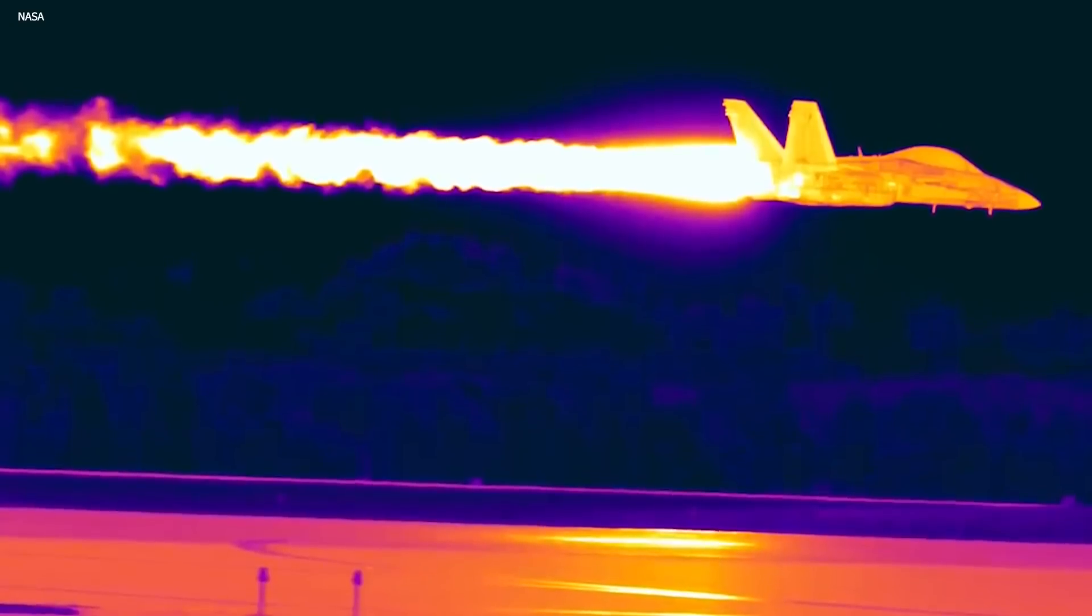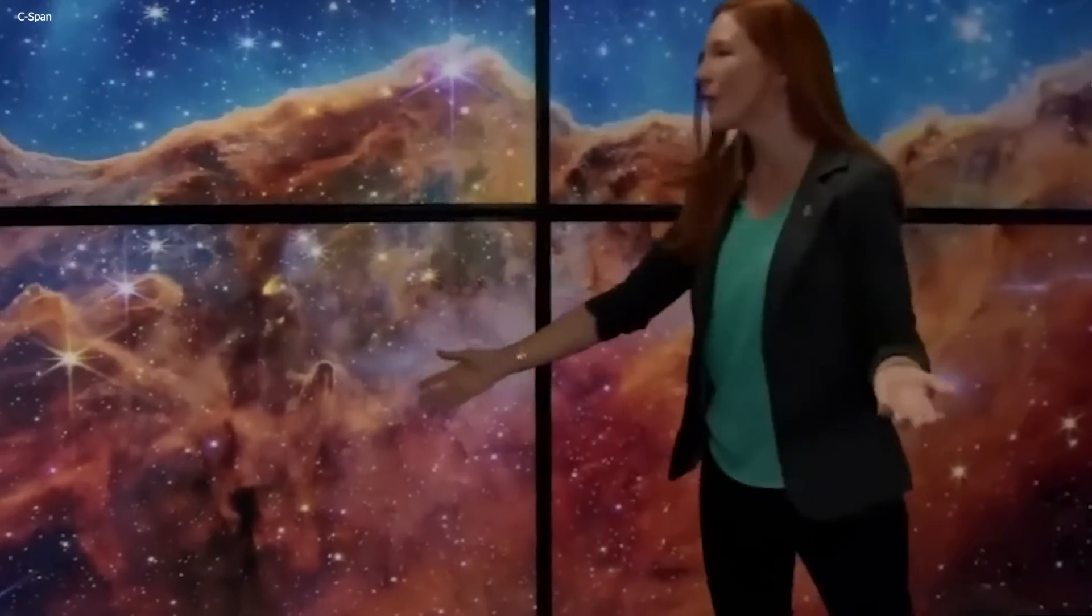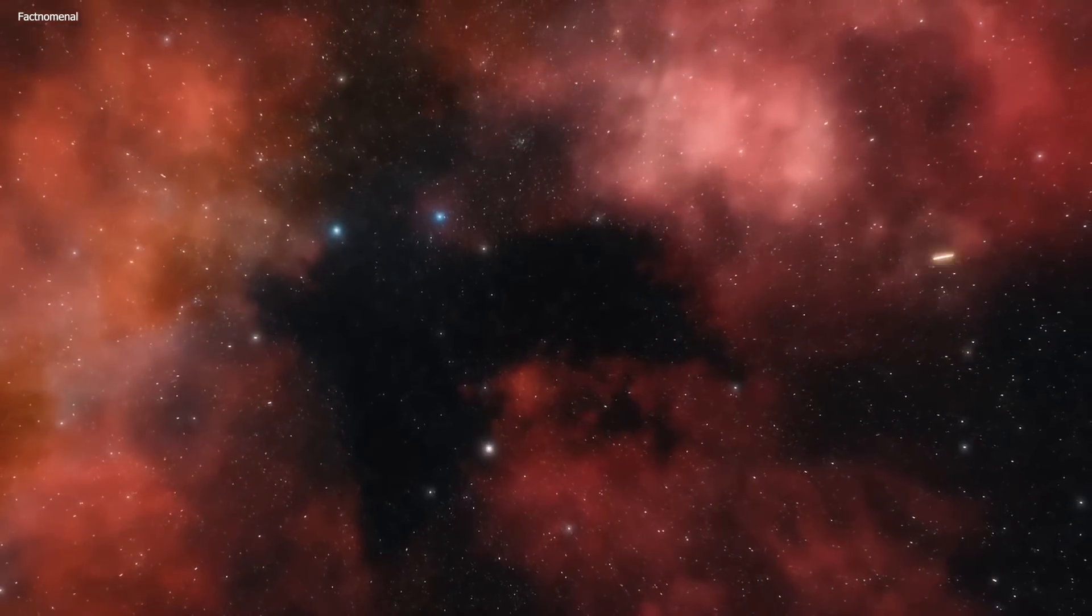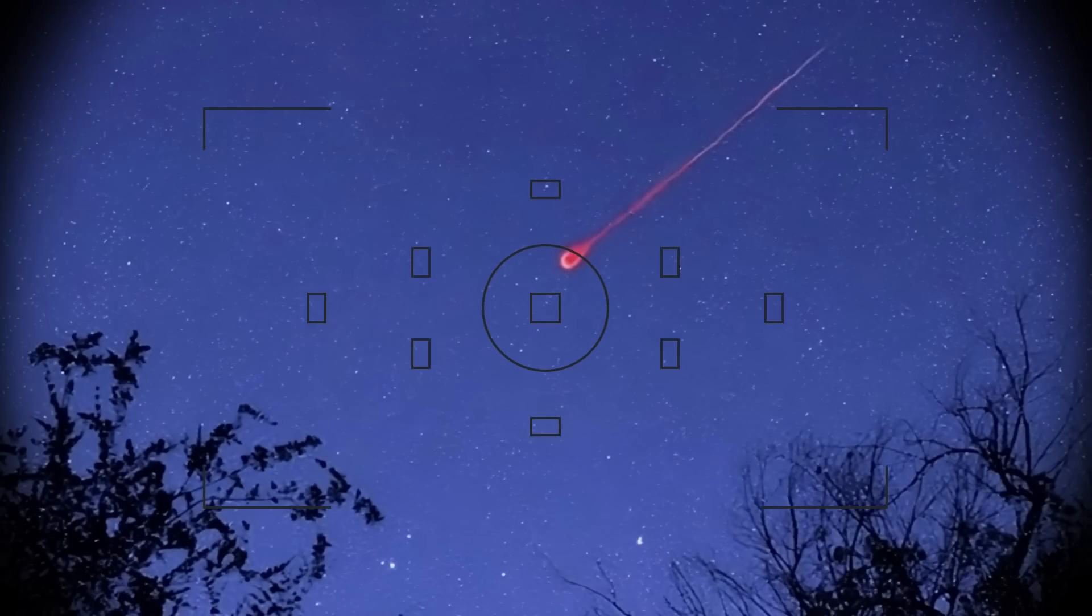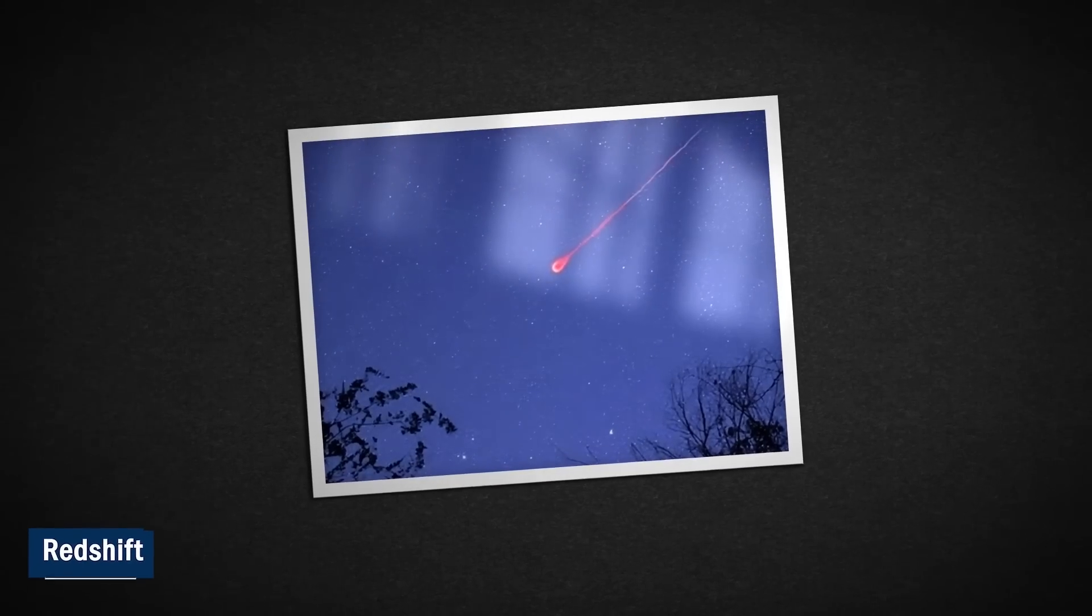The NIR Cam detects these objects in infrared, and then scientists on Earth convert the data to make it visible to our eyes. The universe is expanding, and the farther something is and the faster it moves, the redder it appears. That's why red light is used to represent those distant objects. It's also called a redshift.